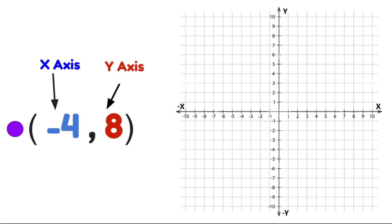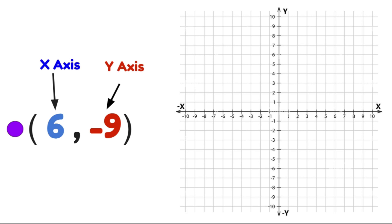Let's do another one together. We have minus 4 and 8, so we need to find minus 4 on our x-axis and 8 on our y-axis. The point where these two numbers meet is where we put our dot. Let's try one more: 6 and minus 9. We need to find 6 on our x-axis and minus 9 on our y-axis. The point where these two numbers meet is where we put our dot.